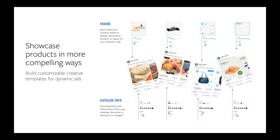Another really cool launch within the last several months is overlays for dynamic ads. This allows you to automatically add price and discount tags on creative assets for product ads. Advertisers around the world can now build customizable creative templates for their dynamic ads to showcase products in compelling ways. For example, if you're creating a Black Friday campaign with your catalog, you could add an overlay. Many of our partners, including Feedonomics, have really sophisticated creative overlay tools — offering custom branded overlays that are unique to the individual advertiser.